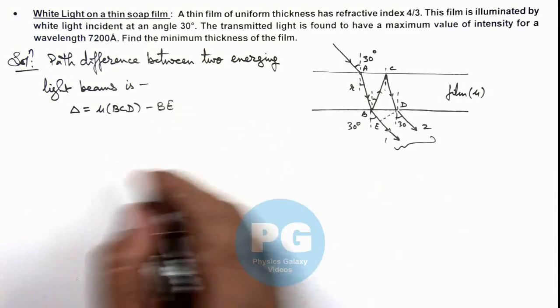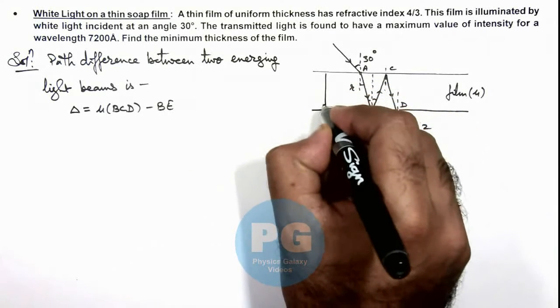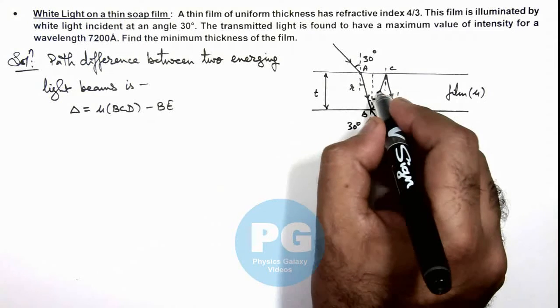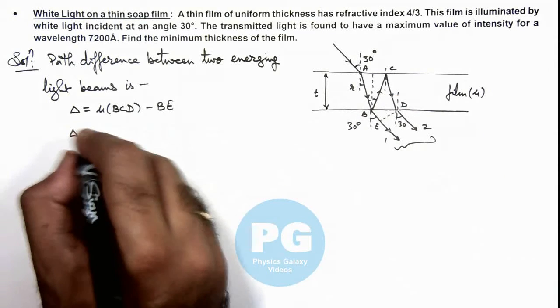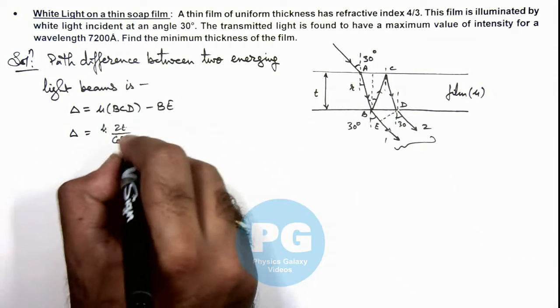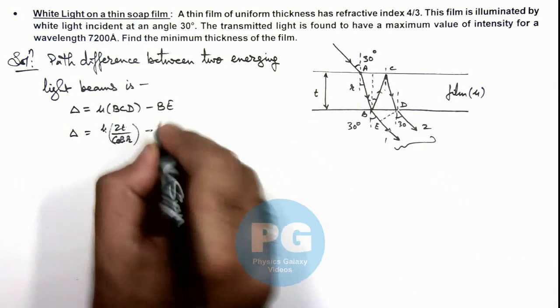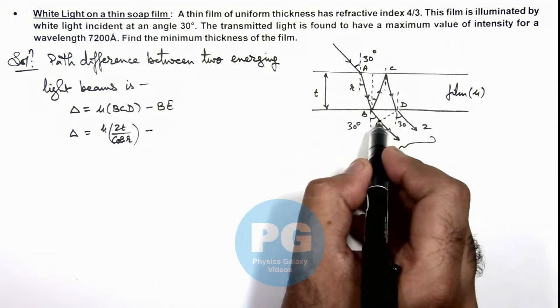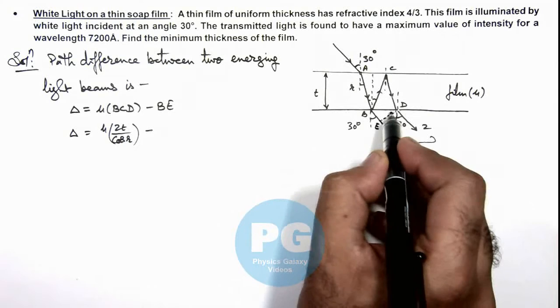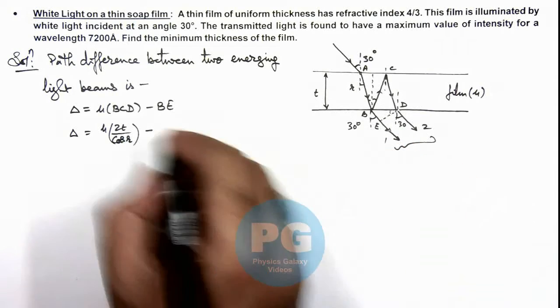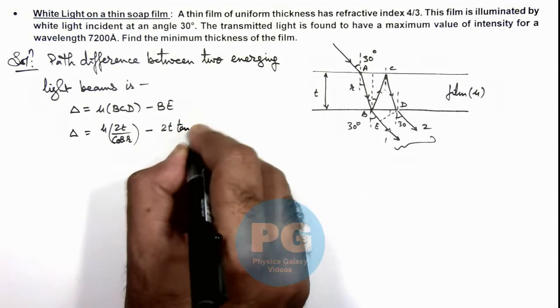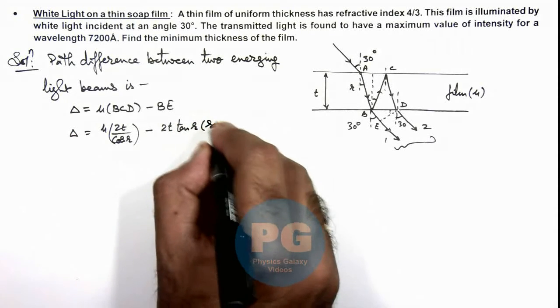So if we substitute the values, if thickness of this film is t, then this path length BC can be written as t by cos r. So this path difference will be mu times 2t by cos r minus this path length BE. We can write this length multiplied by sine 30 degrees, as this angle is also 30 degrees, and this length will be 2t tan r multiplied by sine 30 degrees.